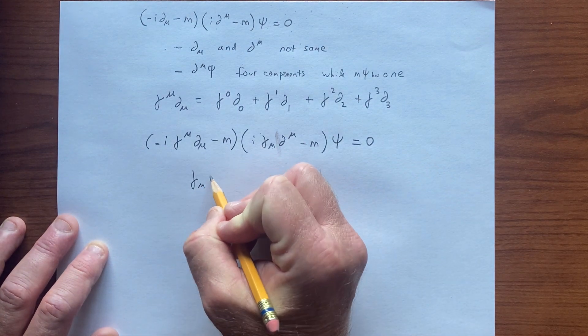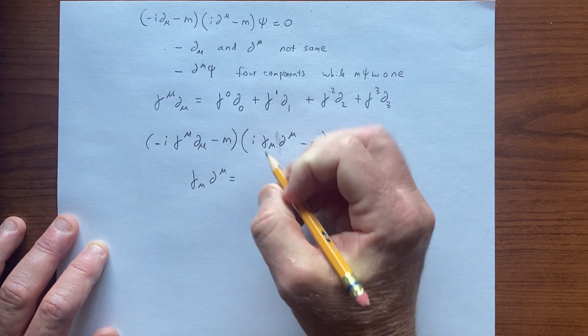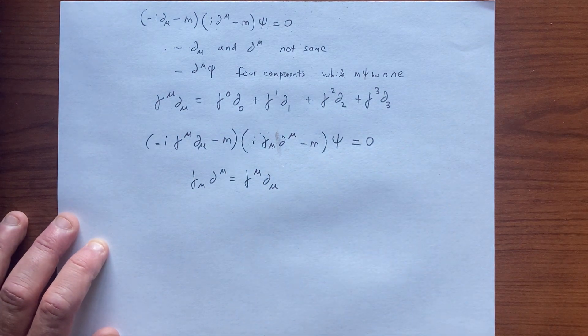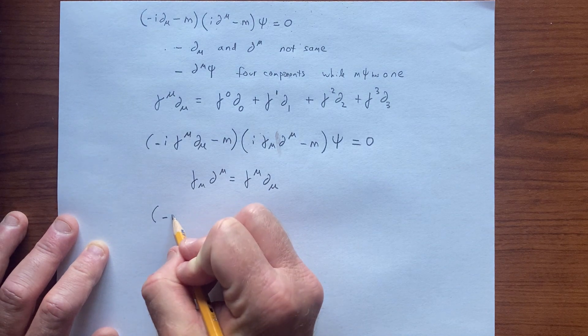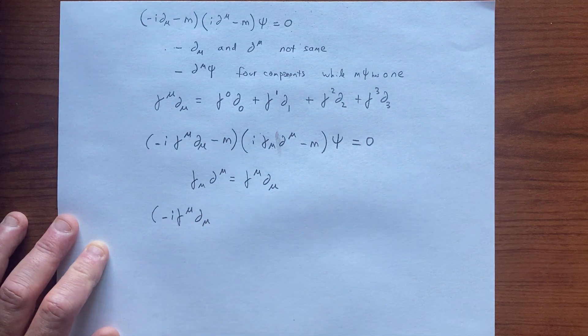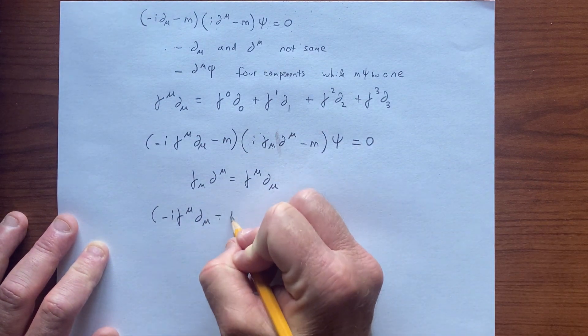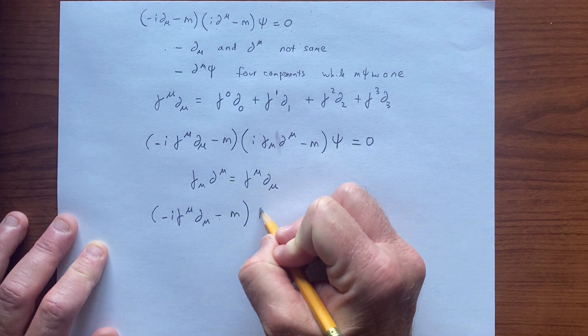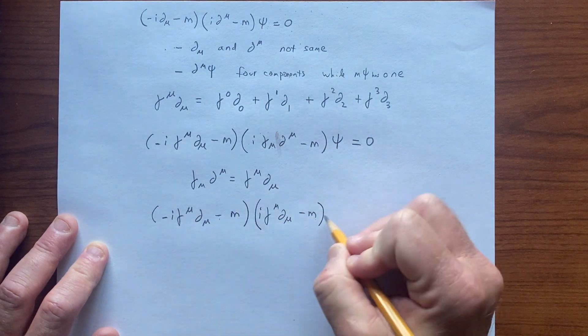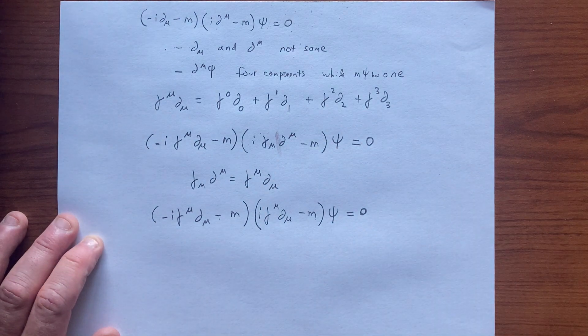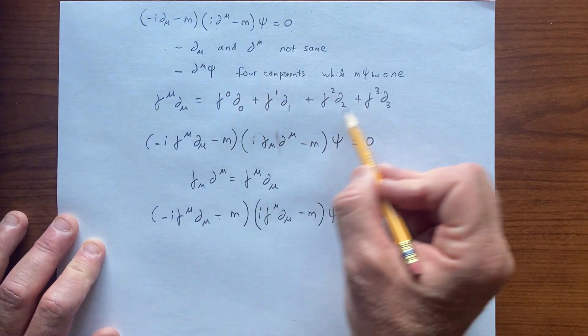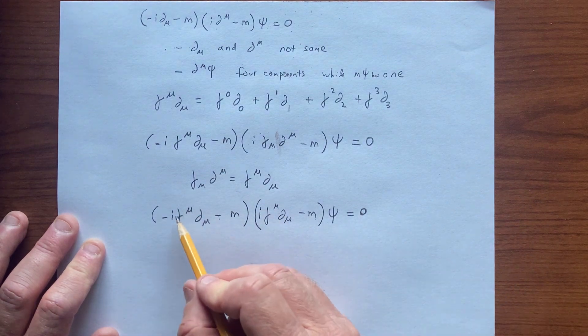So gamma_mu d^mu equals gamma^mu d_mu, and we are led to -i gamma^mu d_mu - m psi = 0. So we built this object, and these two things will get us this kind of thing, but then we multiply them.